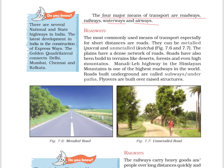There are several national and state highways in India. The latest development in India is the construction of expressways. The Golden Quadrilateral connects Delhi, Mumbai, Chennai, and Kolkata.